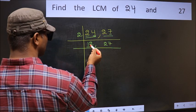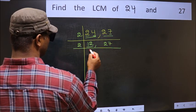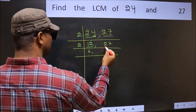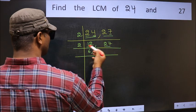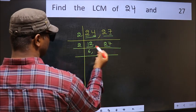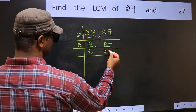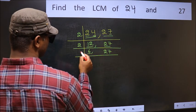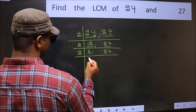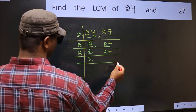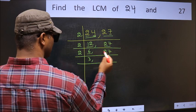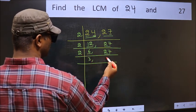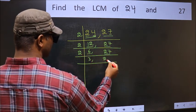Now we have 12. 12 divided by 2 gives 6, since 2 times 6 is 12. The other number 27 is not divisible by 2, so write it down as it is. Now we have 6. 6 divided by 2 gives 3, since 2 times 3 is 6. Again, 27 is not divisible by 2, so write it down as it is.